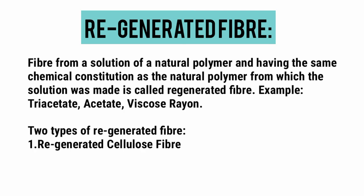Fiber from a solution of a natural polymer and having the same chemical constitution as the natural polymer from which the solution was made is called regenerated fiber. Examples: triacetate, acetate, viscose rayon. There are two types of regenerated fiber: 1. Regenerated cellulose fiber, and 2. Regenerated protein fiber.